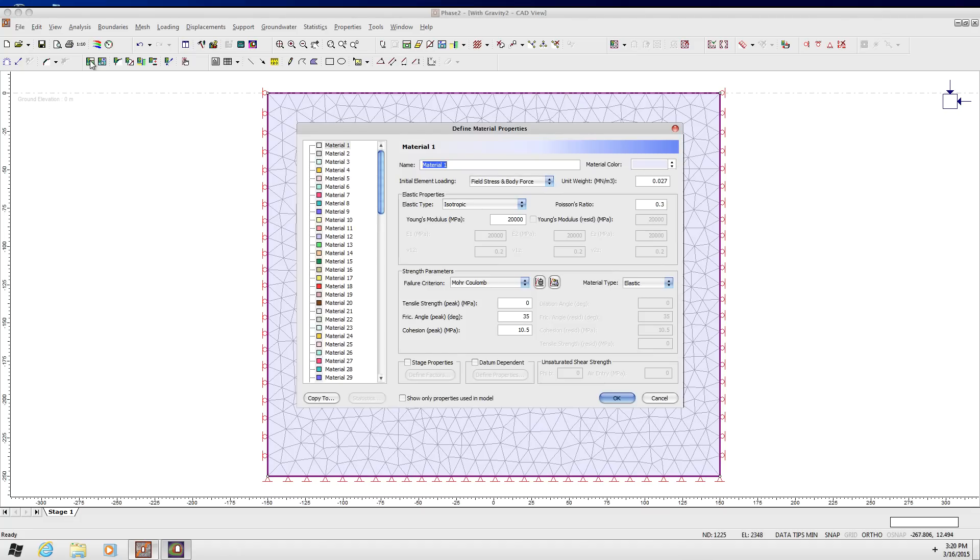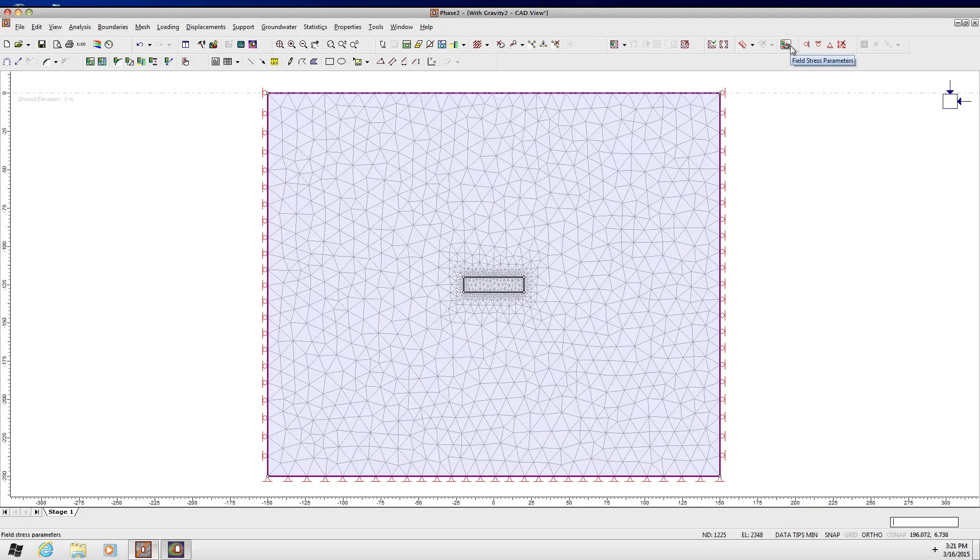So the first thing you do is look at the material properties. So we are going to use the gravity loading, so the unit weight certainly has to be correct. Also, under initial element loading, this is the main thing that you have to make sure is set up correctly. This drop-down allows you to select field stresses or body forces or both. Field stresses are basically those tectonic stresses, that in-situ stresses that you might include in your simulation. If you just have uniform, constant stresses in the model. Body forces are basically due to the forces of gravitational loading. In this simulation, we want to include both. So we make sure that we click on field stress and body force. And this is not the default, so you have to make sure you go in there and explicitly change that.